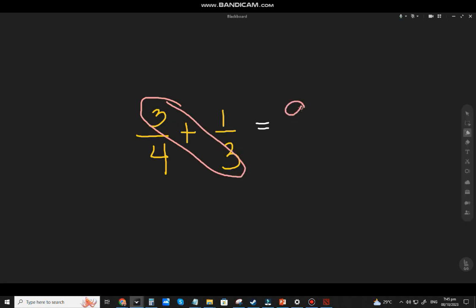3 times 3, that will be 9. And just copy the operation. 1 times 4, that will be 4. And in our denominator, that will be 4 times 3. That will be 12. Now, the next one. 9 plus 4 is 13 over 12.